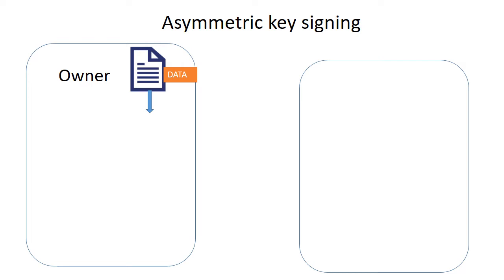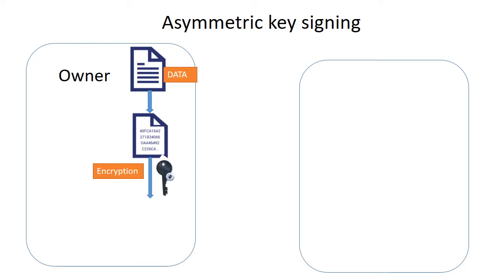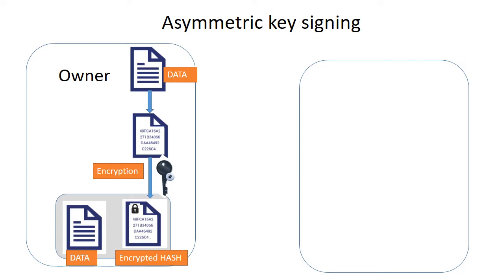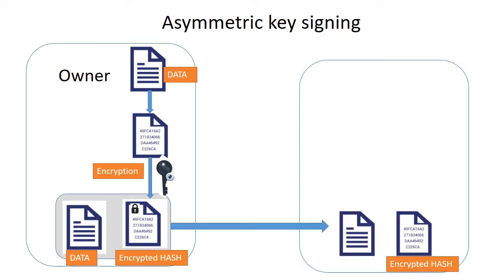So this process is a two-step process. The owner of the private key takes the data and creates a hash of this data, and here we could use any hash function that we have discussed before. Each hash will be unique and it will be a fixed length. The hash is then encrypted using the private key — recall that the private key is only available to the owner, nobody else knows it — and after that the encrypted hash along with the data is sent to the other party.